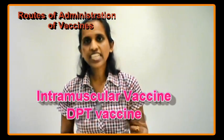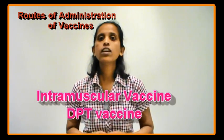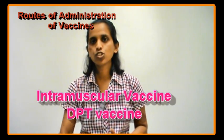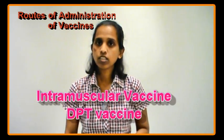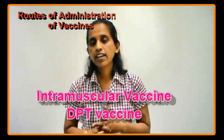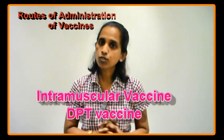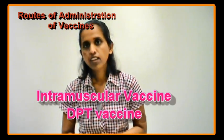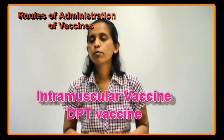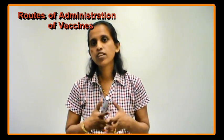The preferred site for an intramuscular injection of DPT is the anterolateral aspect of the thigh — the front portion of the thigh where muscle mass is greater compared to the buttocks. The risk of nerve damage if given in the buttocks at that age is much higher. The arm is not a suitable choice for vaccine administration in children, as the muscle mass there is poorly developed at that age.